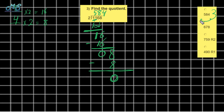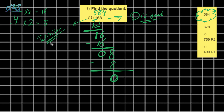The correct answer is the first one. Don't forget the vocabulary: 1,168 is called the dividend, 2 is called the divisor, and 584 is called the quotient.